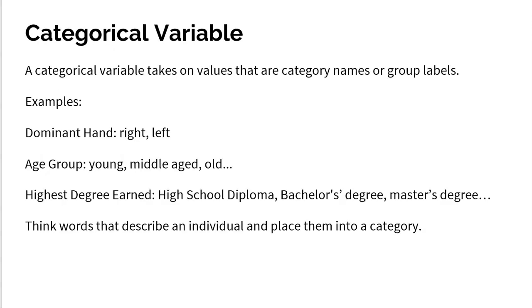Categorical variable takes on values that are category names or group labels. So here, we're thinking words, right? So if the answer to the question, what is that chair made of? If it's a word, it's going to be a categorical variable because you're going to go into the plastic group name or the plastic bin. This chair is going to go into the bin that's labeled plastic. This chair is going to go into the bin that's labeled cloth or wood or metal or wicker. So that's the idea.